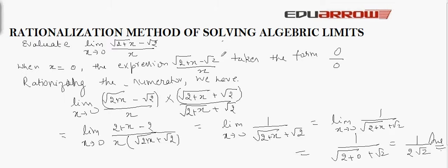So the rationalization method is applied where the expression takes the form 0/0 or infinity/infinity. We rationalize the numerator or denominator as the case may be, apply the difference-of-squares formula, and the common term cancels out so the denominator no longer gives 0. The expression reduces to normal form and we can directly apply the limit. Note that this method is applied where either the numerator or denominator contains terms with square roots.